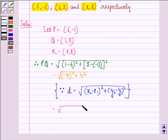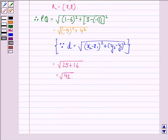This is same as square root of 25 plus 16 and that is equal to square root of 41. And also, QR is equal to square root of (x-1) the whole square plus (8-3) the whole square.